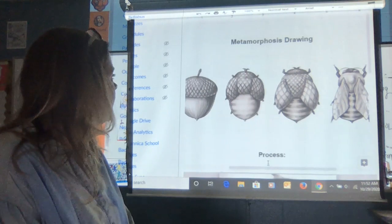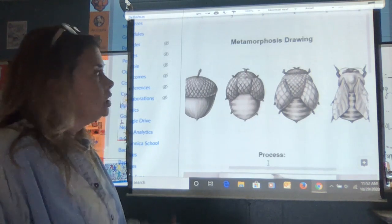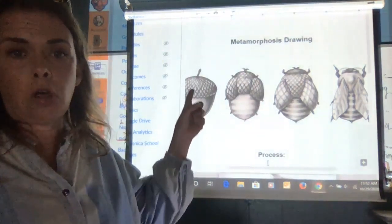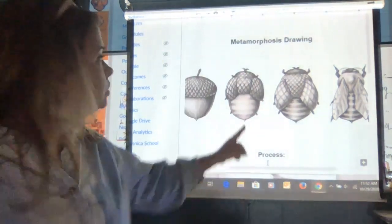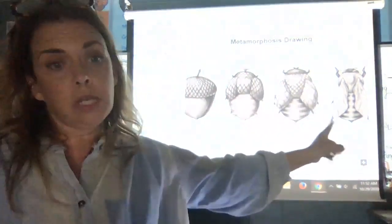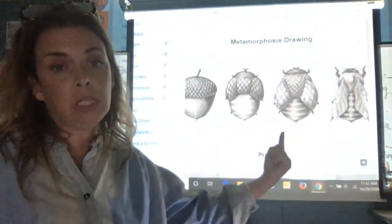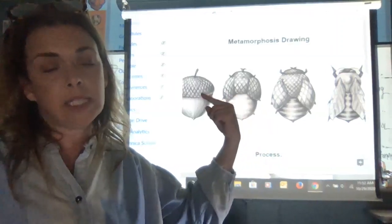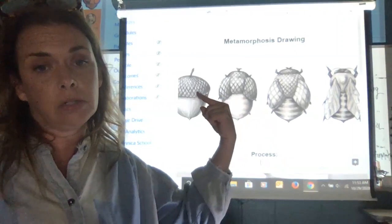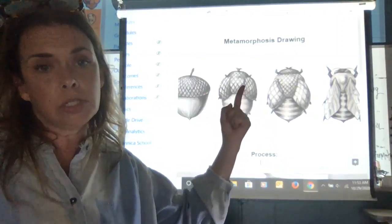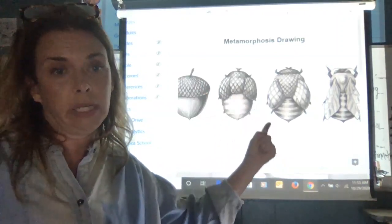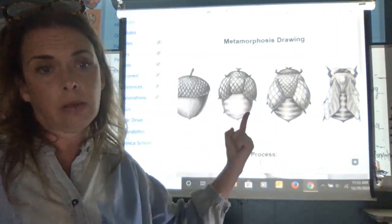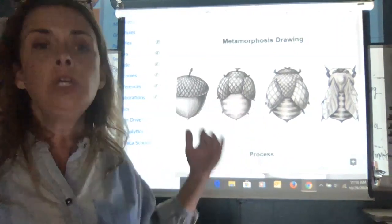This is like an acorn gradually changing into either a bee or some sort of flying bug. What you do is you draw one object first, you draw the other object, and then in between those, you're going to do two steps of starting to change. In this case, the acorn hat top starts to slowly become the wings of the bug. Down here, this starts to become, now it's got stripes for the bee.